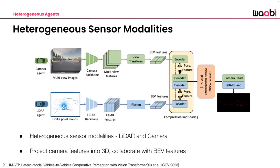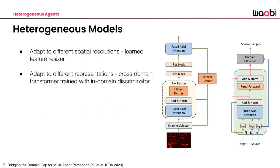With different sensor modalities — camera and lidar, 2D versus 3D features — there are now networks that perform feature-level fusion between modalities. These are trained with the end perception or prediction task in mind, fusing features in a way that's optimized for the final autonomy objective. There's also work that adapts to different spatial resolutions across sensors or vehicles.